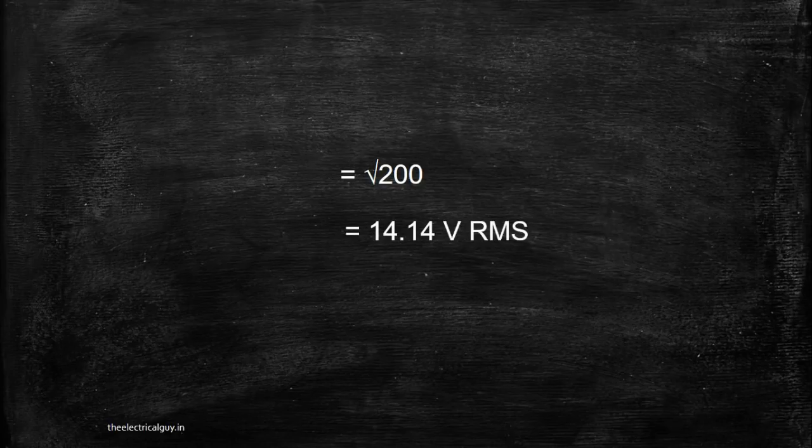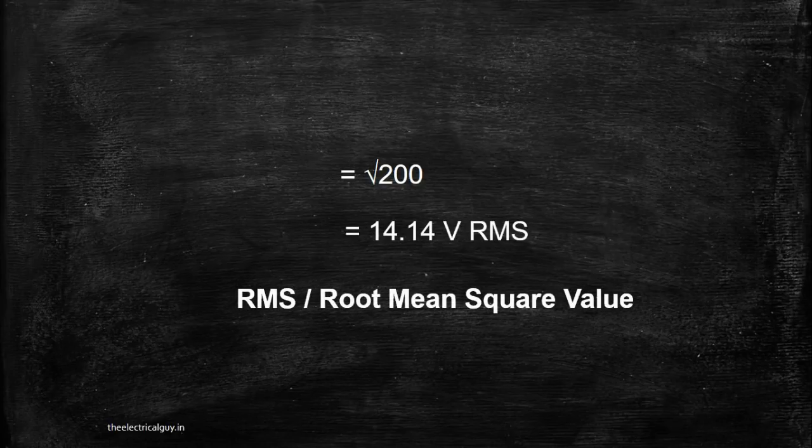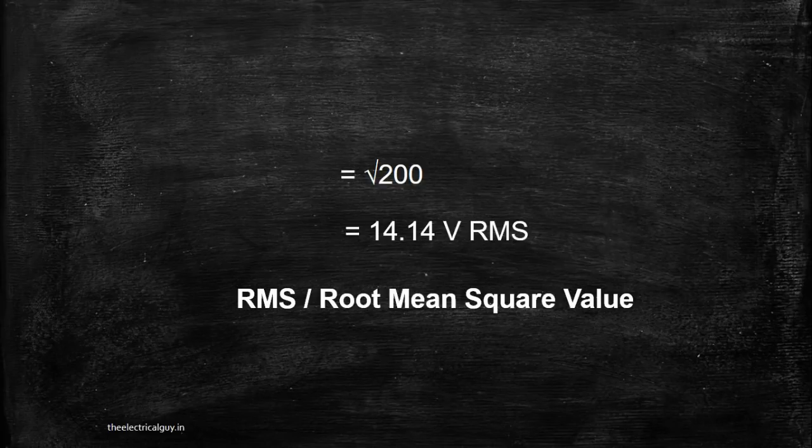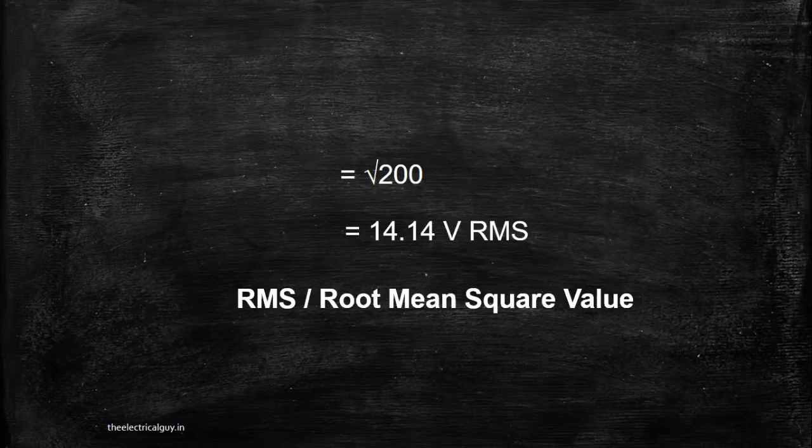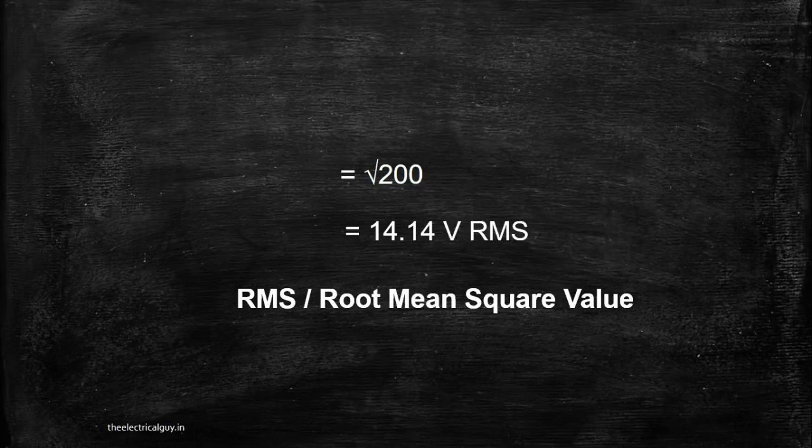The value we get from this method is known as RMS or root mean square value. So, in our example, the peak value was 20V where the effective value or the RMS value is 14.14V.